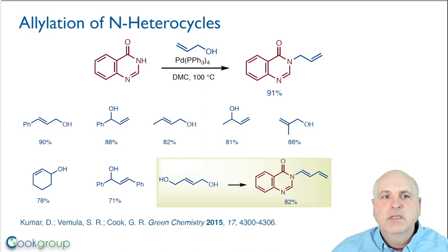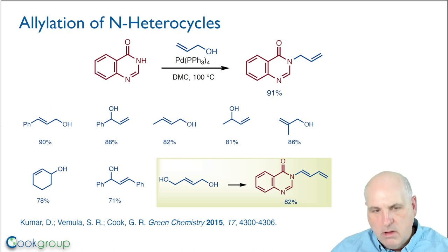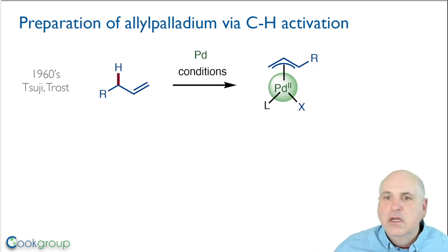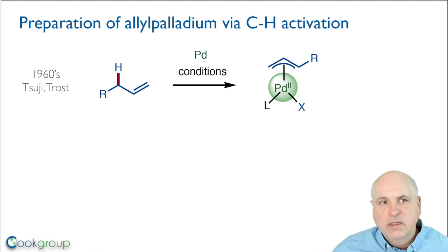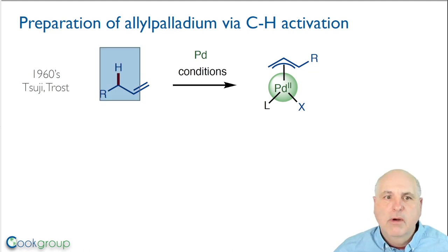Of course all of these reactions still rely on having an oxidized form of the allyl system in the form of an allyl alcohol. Ideally we would like to carry out this reaction to generate π-allylpalladium complexes directly from olefins themselves, where we do an oxidation of an allylic carbon-hydrogen bond — that would be a much more efficient and greener process.